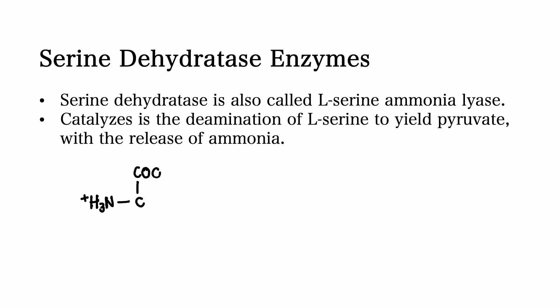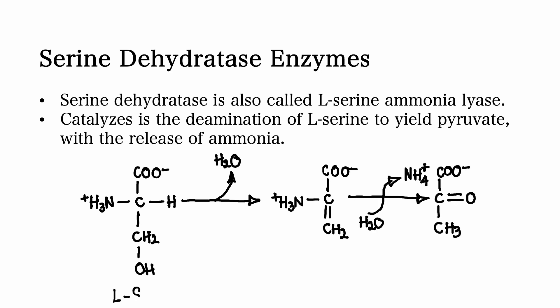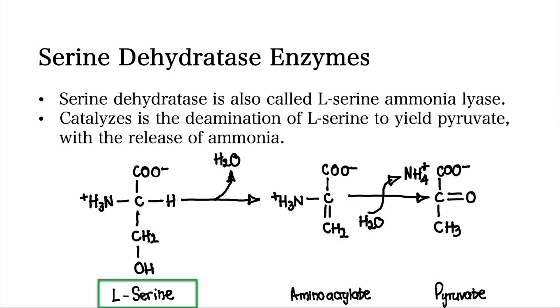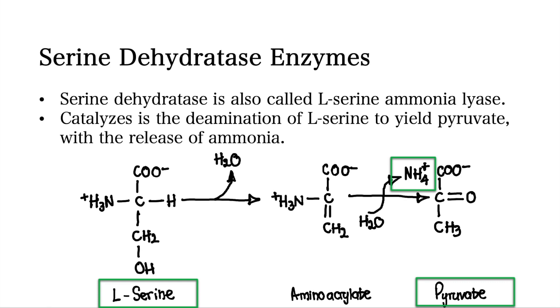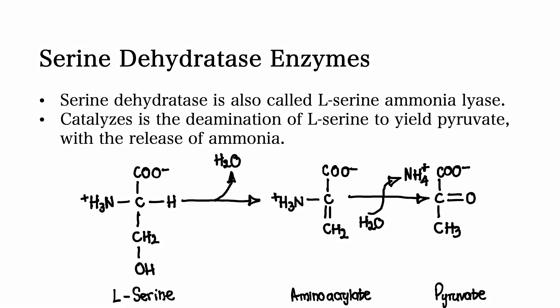Let's take serine dehydratase as an example. Serine dehydratase is also called L-serine ammonia lyase. It catalyzes the deamination of L-serine to yield pyruvate with the release of ammonia. As you can see in this reaction mechanism, there is a middle compound known as aminoacrylate as well.